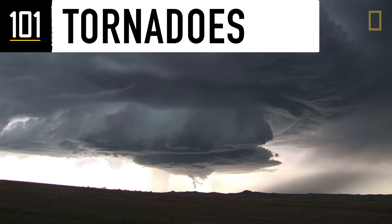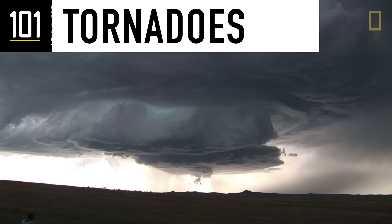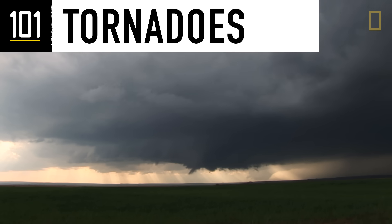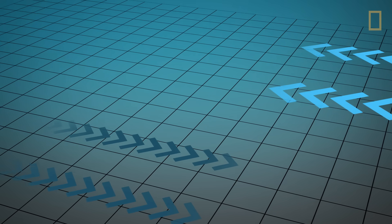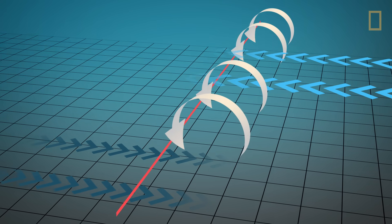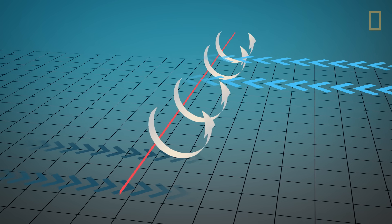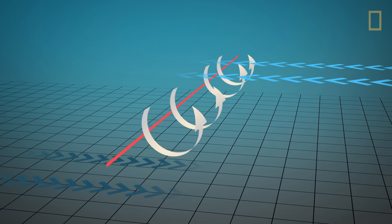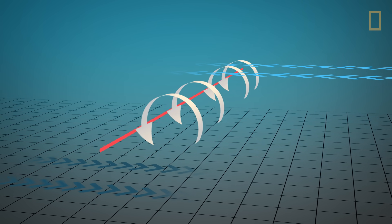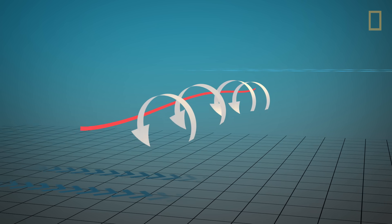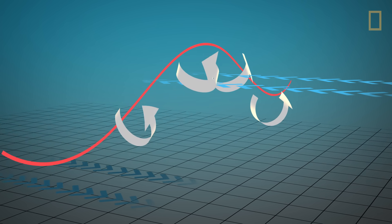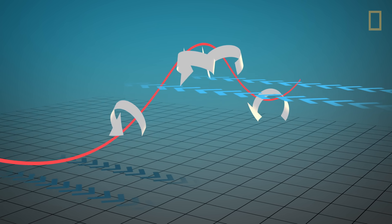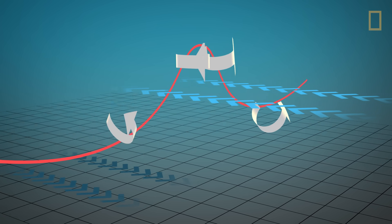Exactly how and why tornadoes occur is still a bit of a mystery, but an indication that one is forming is a wall cloud. Fast-moving winds roll air below into a horizontal vortex above opposing surface winds, similar to a spinning tube. Warmed by the sun, buoyant air near the ground begins to lift a section of the horizontal vortex into a vertical position.